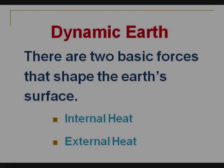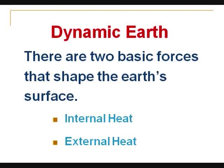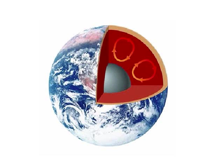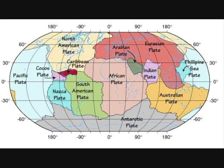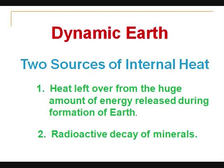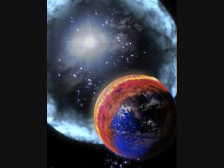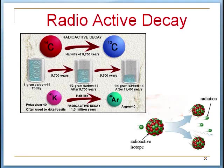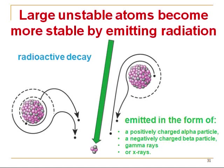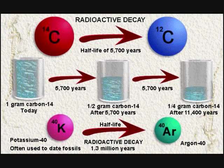There are two basic forces that shape the Earth's surface: internal and external heat. Internal heat, which comes from within the Earth, moves the tectonic plates. There are two sources of internal heat. The first is the heat left over from the huge amount of energy released during the formation of the Earth. The second comes from the radioactive decay of minerals present in the Earth. The unstable elements are called isotopes — they are unstable atoms that want to go from an isotope to a stable atom. When this occurs, they give off gamma rays or particles, which are forms of energy released as heat.